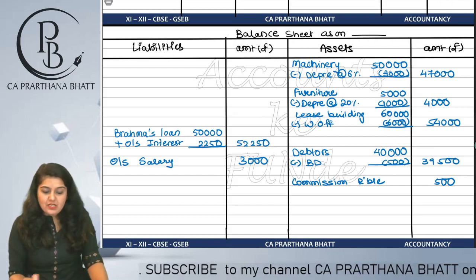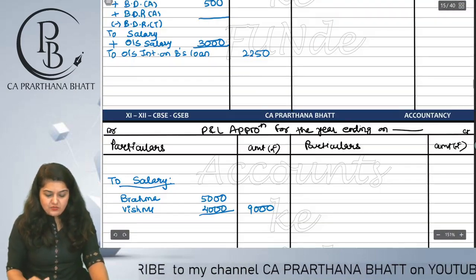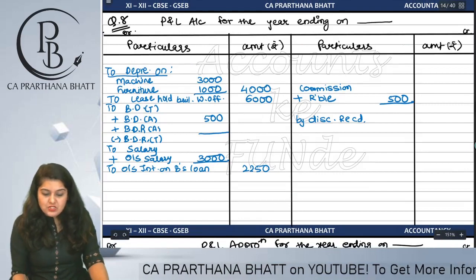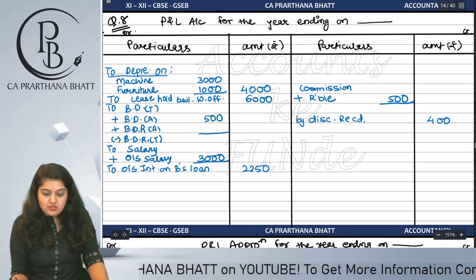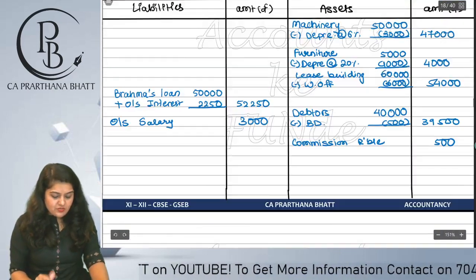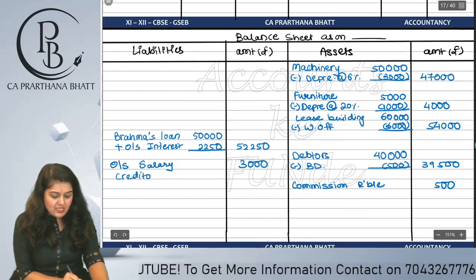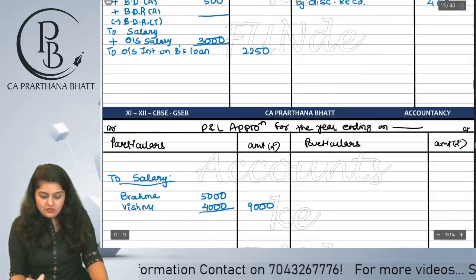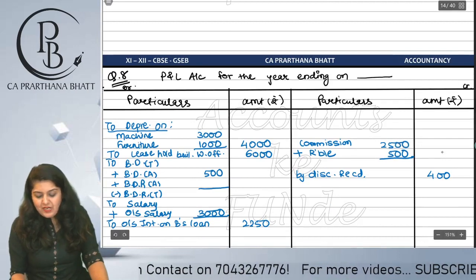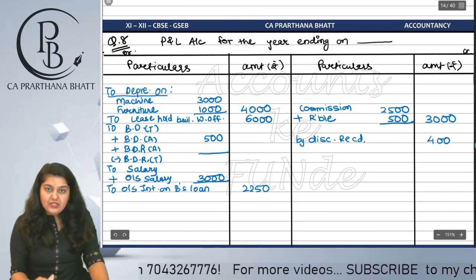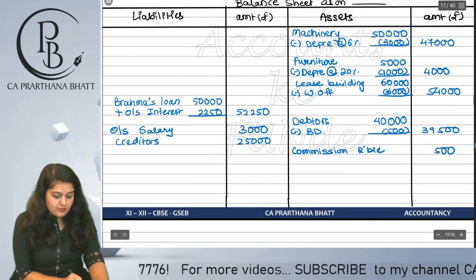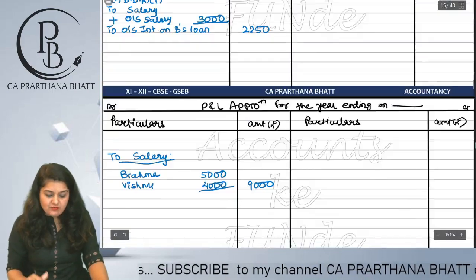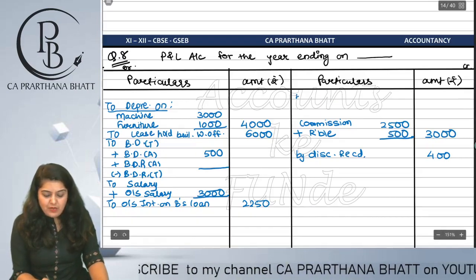Continuing with credit balances: discount received 400 goes to the P&L credit side. Creditors 25,000 go to balance sheet liability side. Commission 2,500 from trial balance plus 500 adjustment = 3,000 in P&L. Bills payable 5,000 in balance sheet liabilities. Trading account credit balance - gross profit of 97,250 - recorded as 'by gross profit transferred from trading account' in P&L.